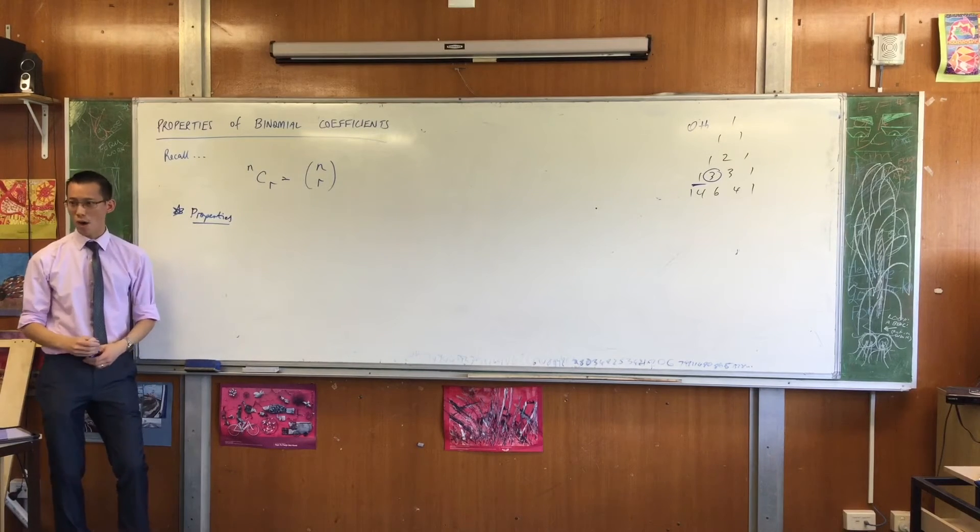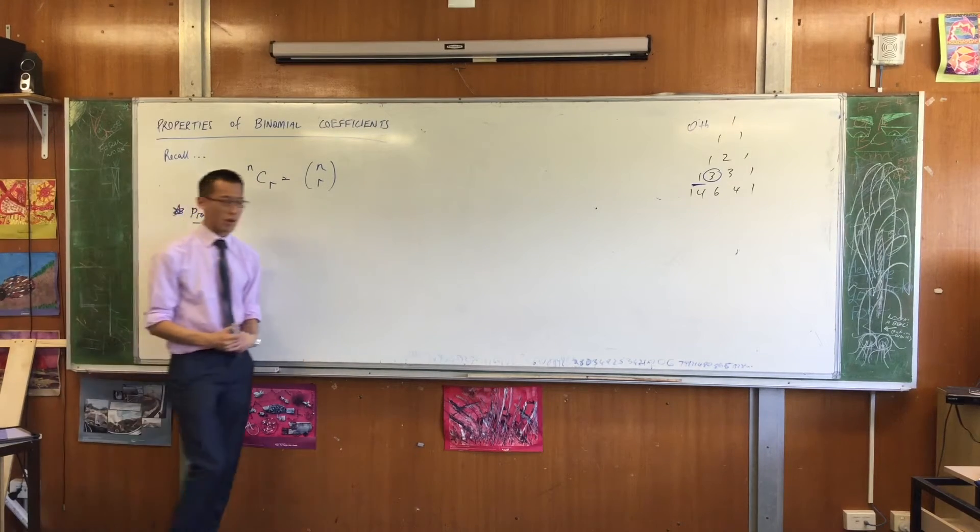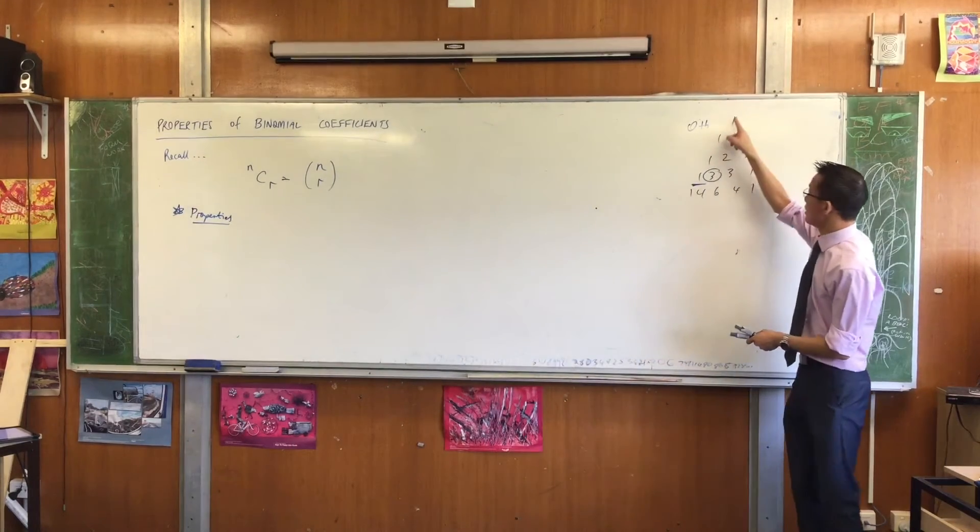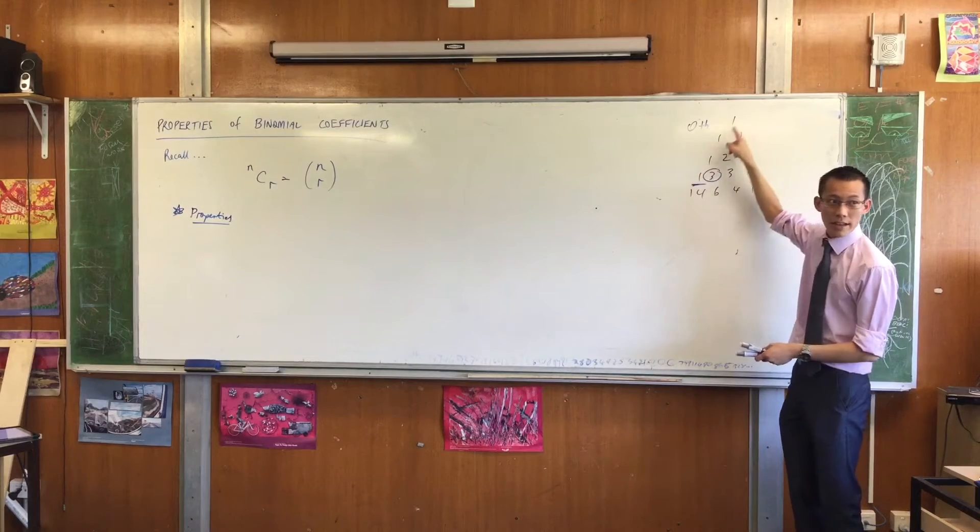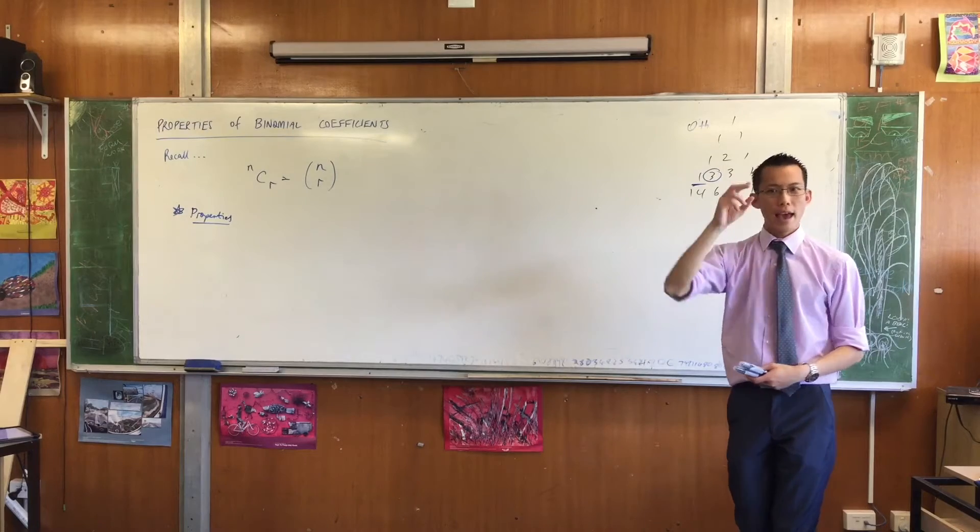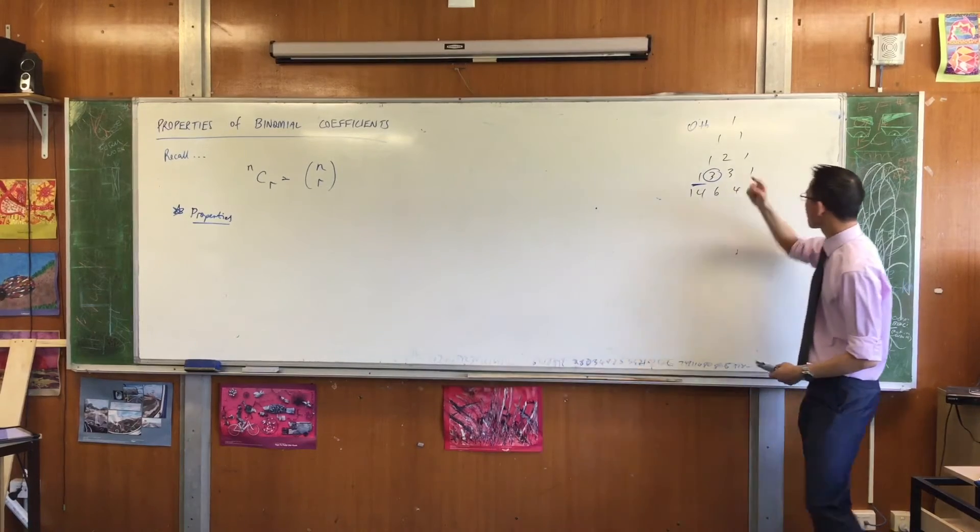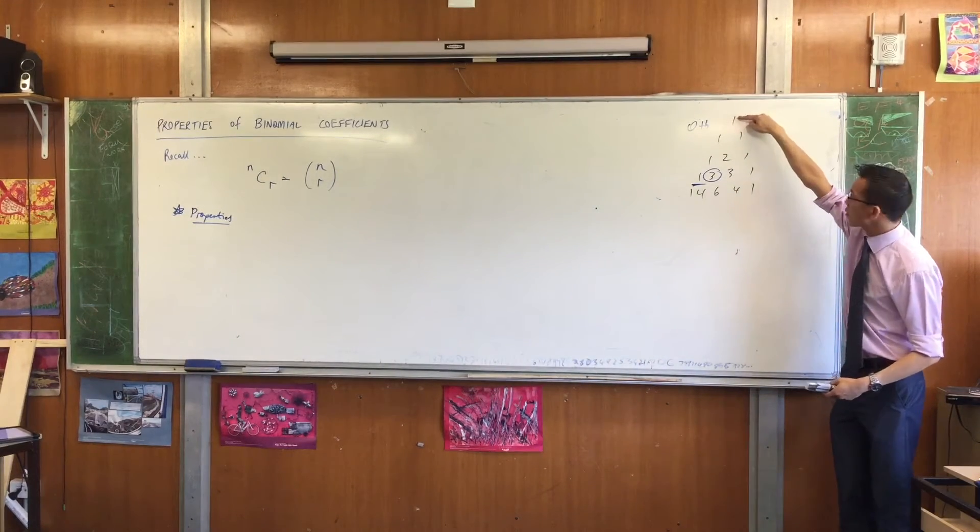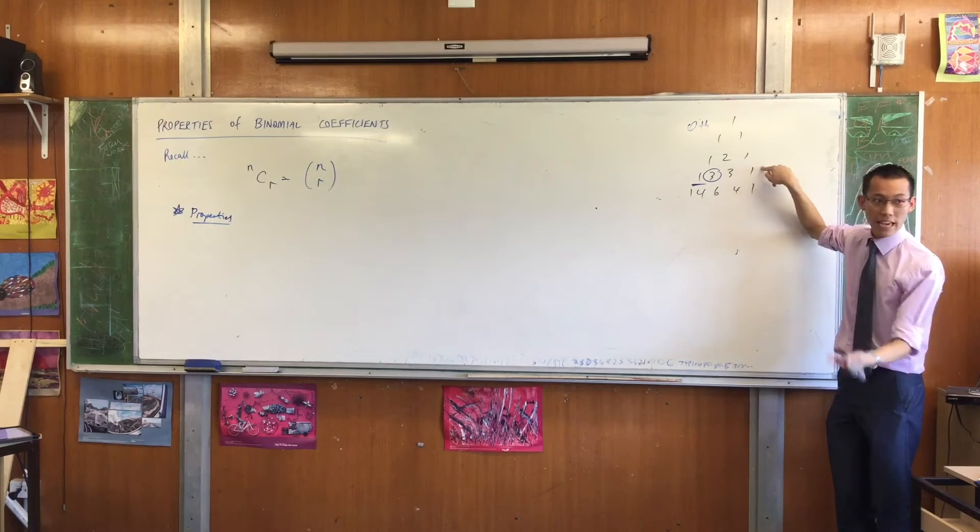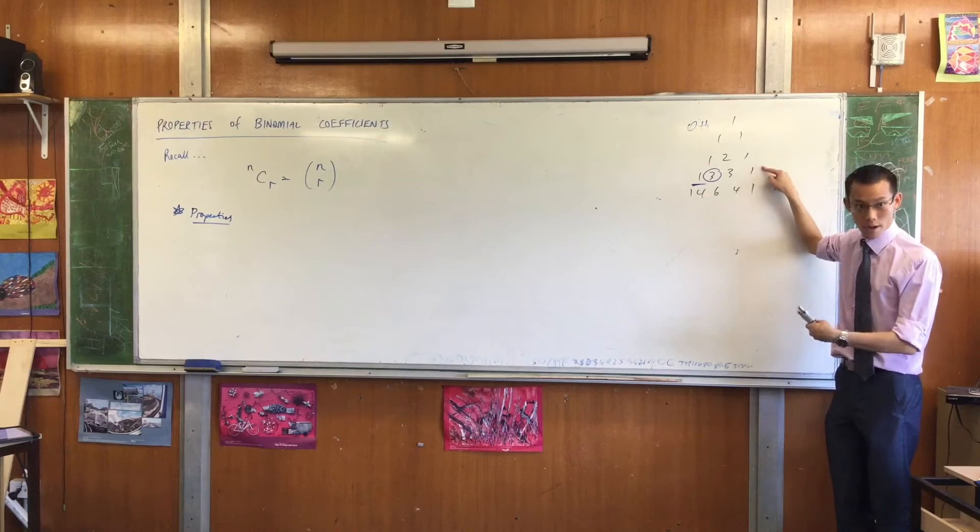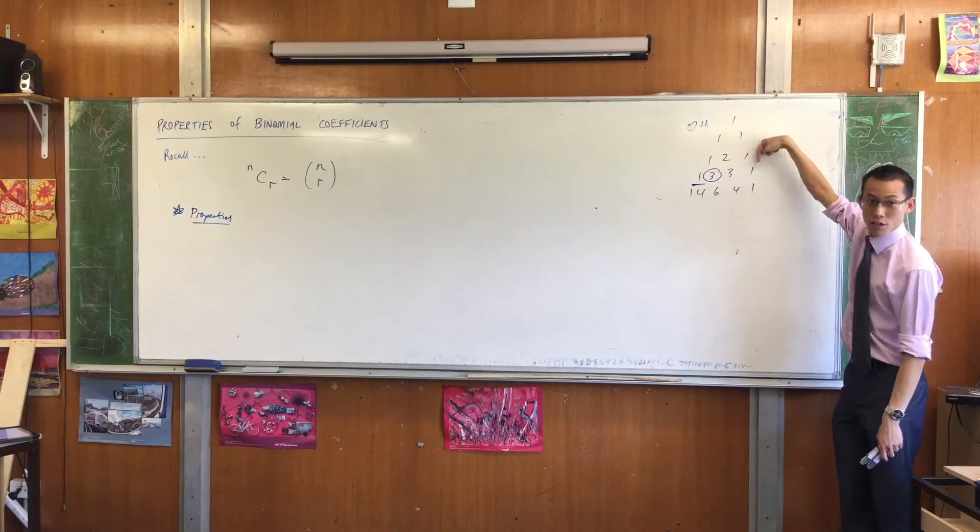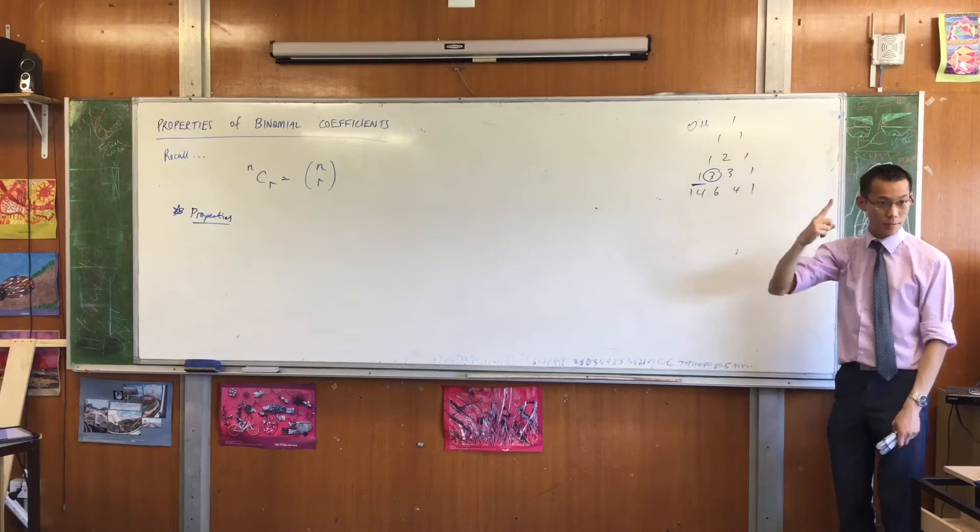Regardless of what row you are in, the zeroth term is always the same, right? The zeroth term is this one going along the left here. Do you agree? So the zeroth term in any row is 1. And in the same way, in the nth row, the nth term is also always the same thing, namely 1, right? Remember, this is 0, 1, 2, 3. So the third row, the third term is 1.